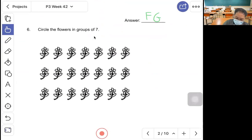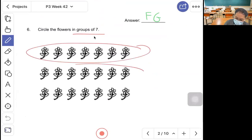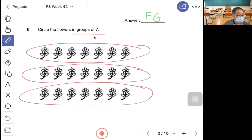Question 6, circle the multiples of 7. Multiples of 7 means 7, 14, 21. Here is the answer.